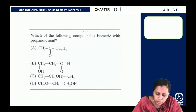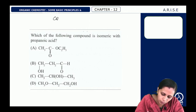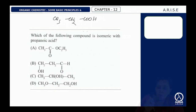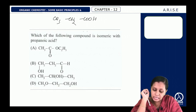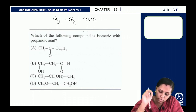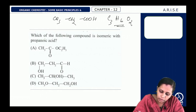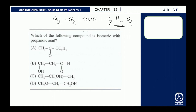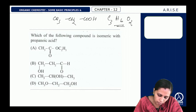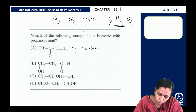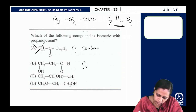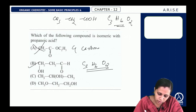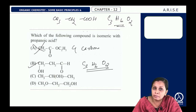Next: which compound is isomeric with propanoic acid? Propanoic acid is CH3–CH2–COOH, with molecular formula C3H6O2. The first option has 4 carbons — not a match. The second option has the formula C3H6O2, the same as propanoic acid. So option B has the same molecular formula and can be an isomer of propanoic acid. The answer is option B.